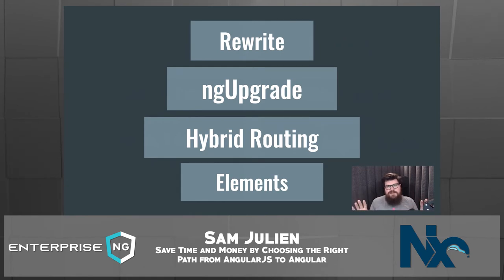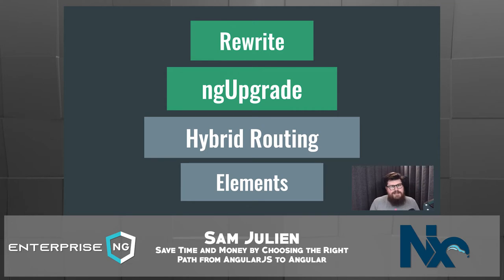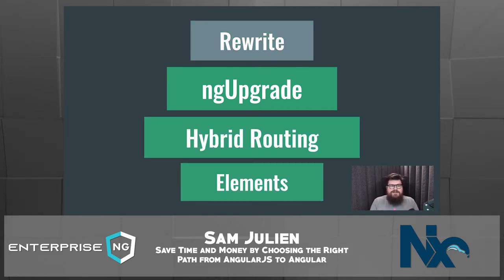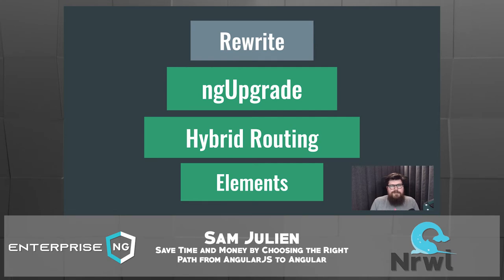Taking these team factors into account, we might say Noble Nonprofit leans toward rewriting or using ng upgrade — they have a smaller team but more sprint time to devote to technical debt. Their mid-sized applications also make ng upgrade a good fit. For Stable Insurance, things are a little unclear so far. We know a full rewrite doesn't seem realistic for a big team with big applications, but it's unclear which other strategies might work for them.